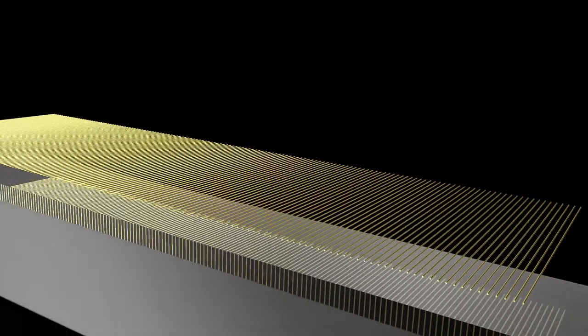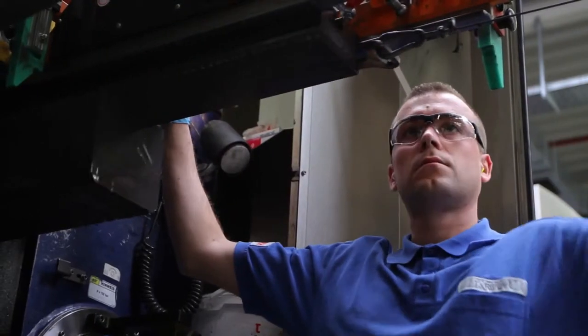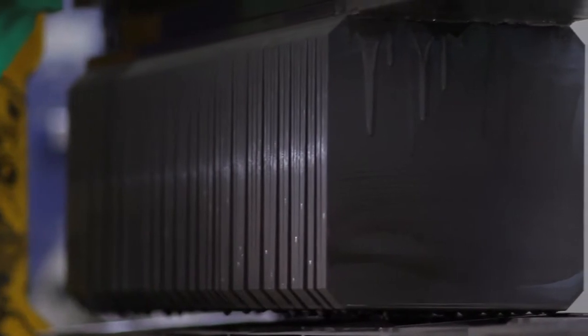The ingots are cut into millimeter-thin slices using a very fine wire saw. The individual slices are called wafers and form the basis of each solar cell.